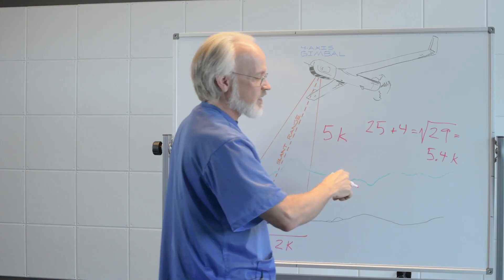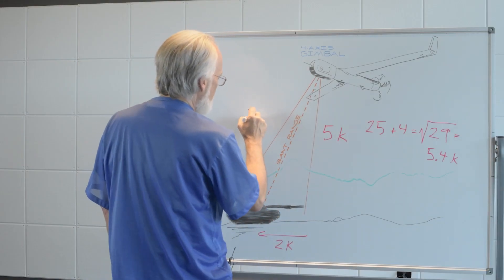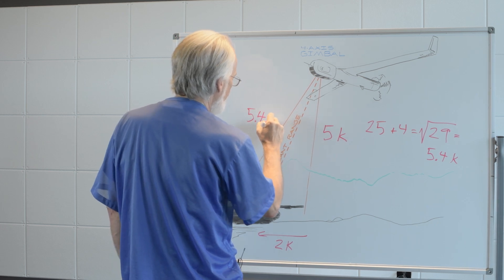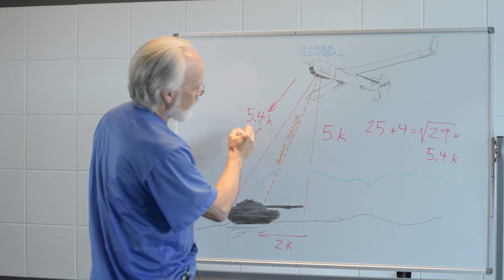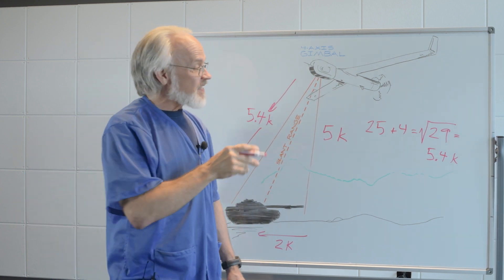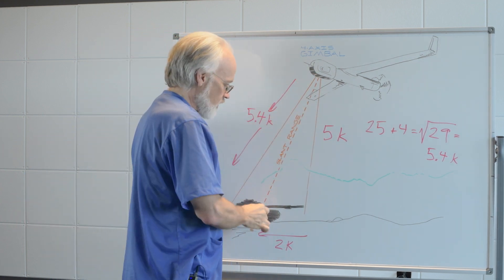Now remember, we're working in thousands of feet here. So that tells us that our slant range here is about 5,400 feet. That's the distance from our imager to the object.